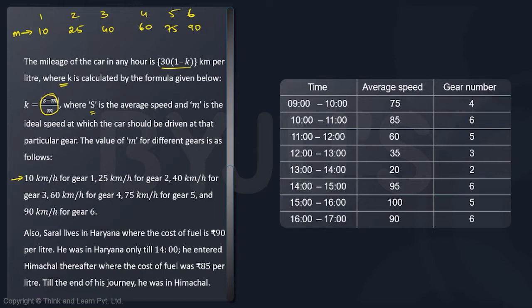Also, Saral lives in Haryana where the cost of fuel is ₹90. Till 2 o'clock he was in Haryana, so till here the cost was ₹90 per liter. After that, he was in Himachal and the cost from here onwards is ₹85 per liter. So now we need to actually find out what is the mileage, what is the fuel used, and what is the cost. First let us calculate the mileage.